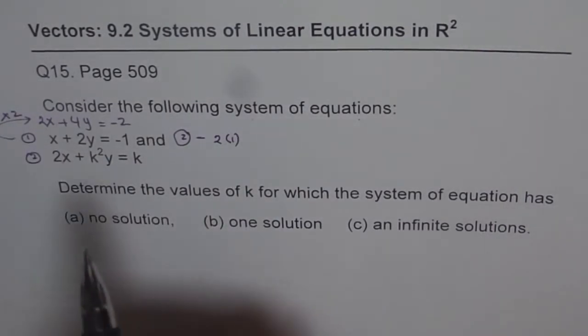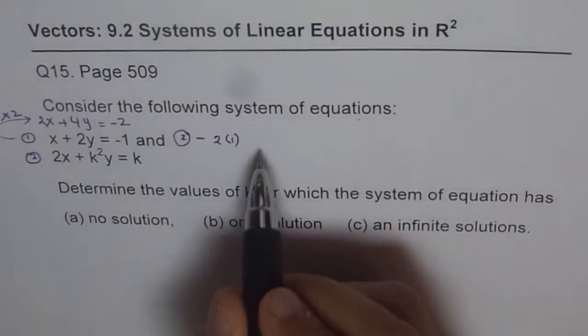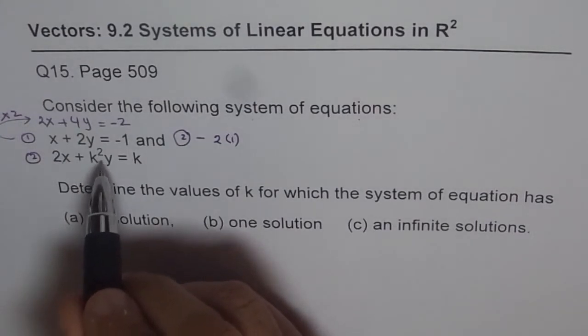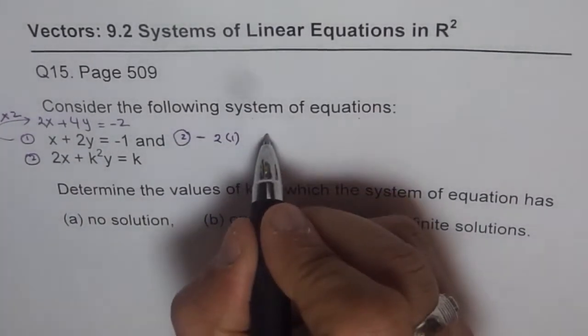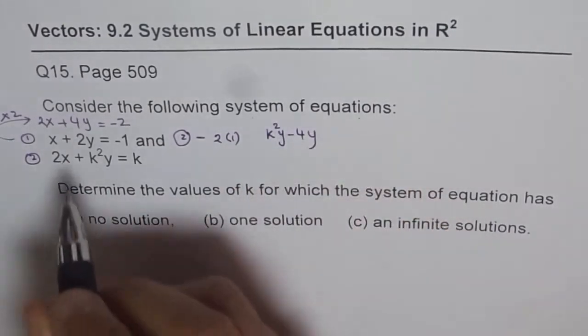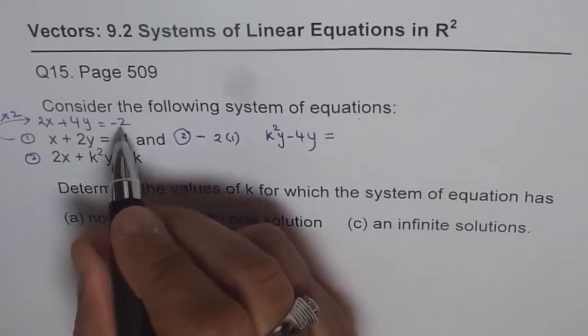Now, we will do equation 2 minus that one and write it here. So 2x minus 2x is 0. And here we get k square y minus 4y. So let me write it down.